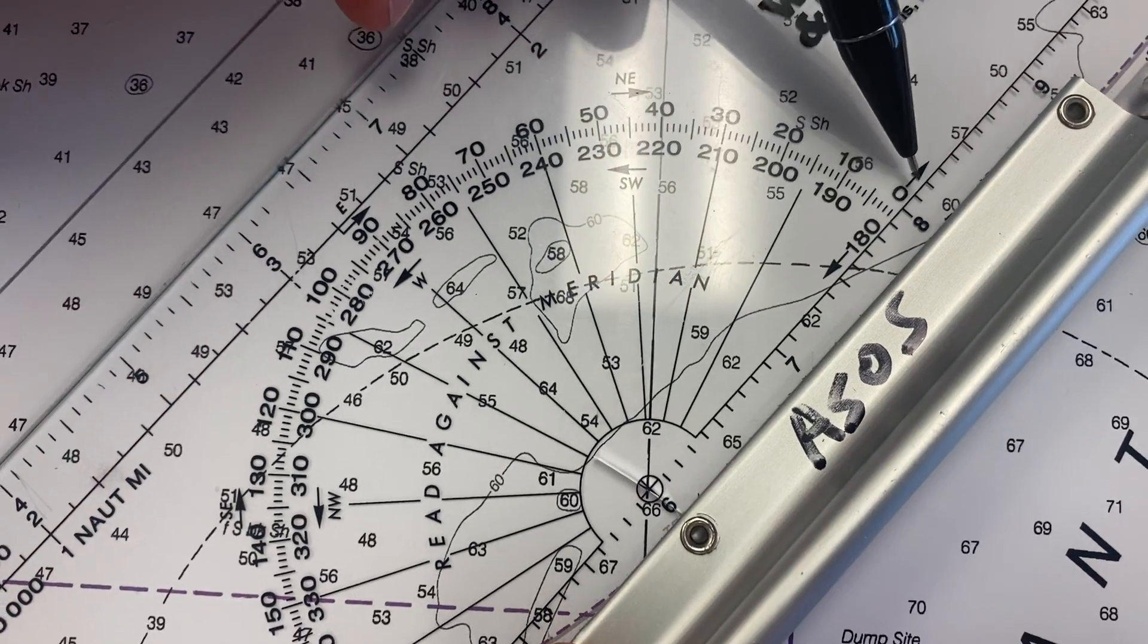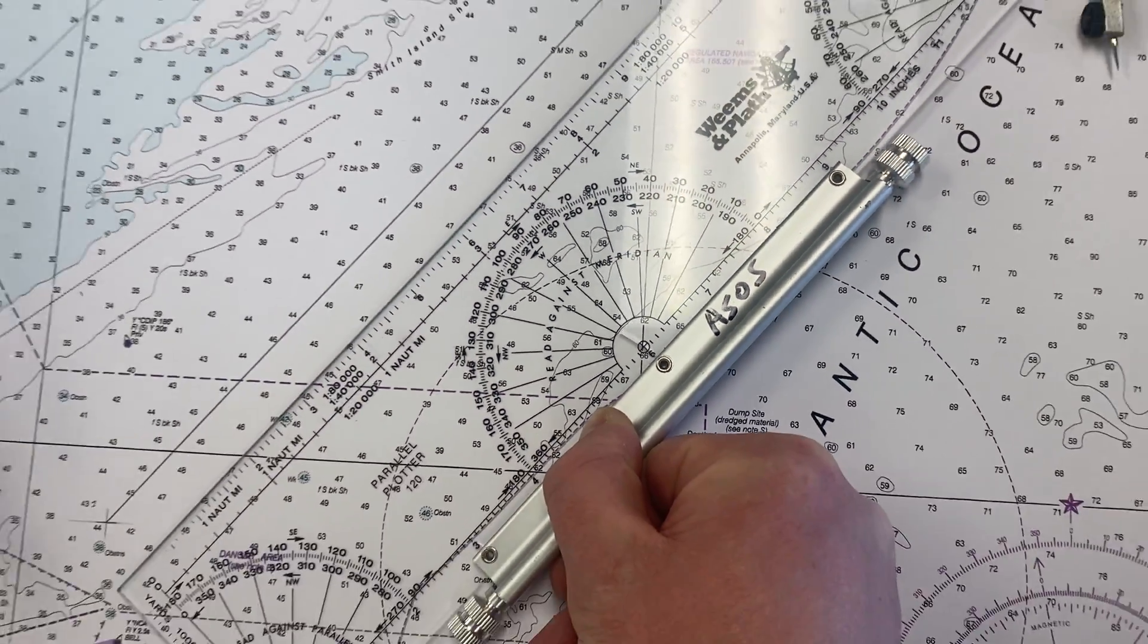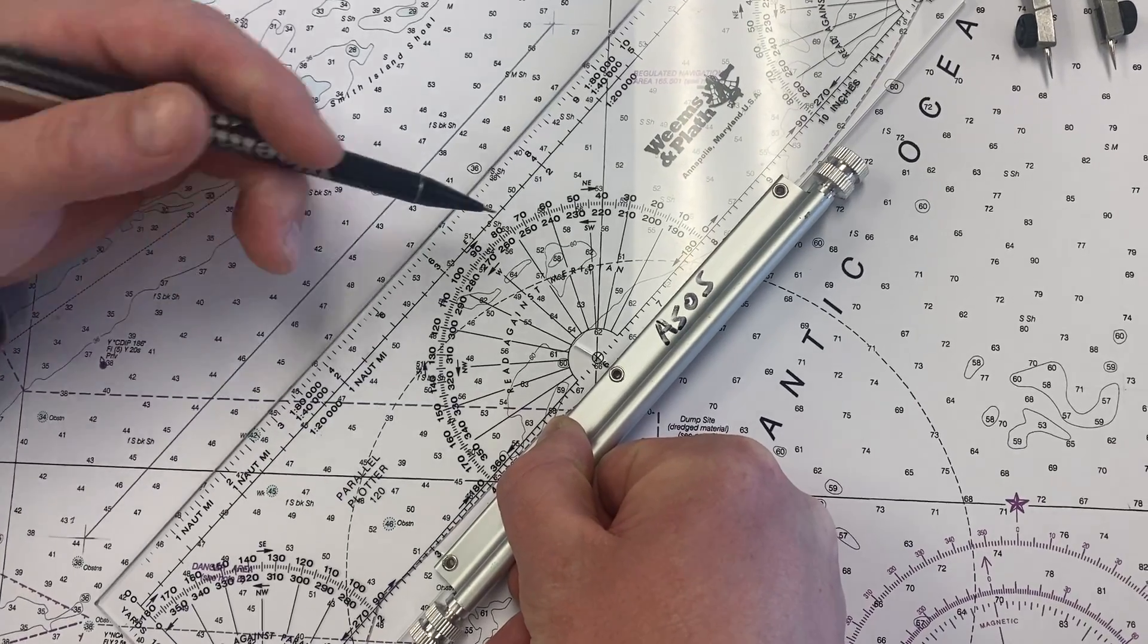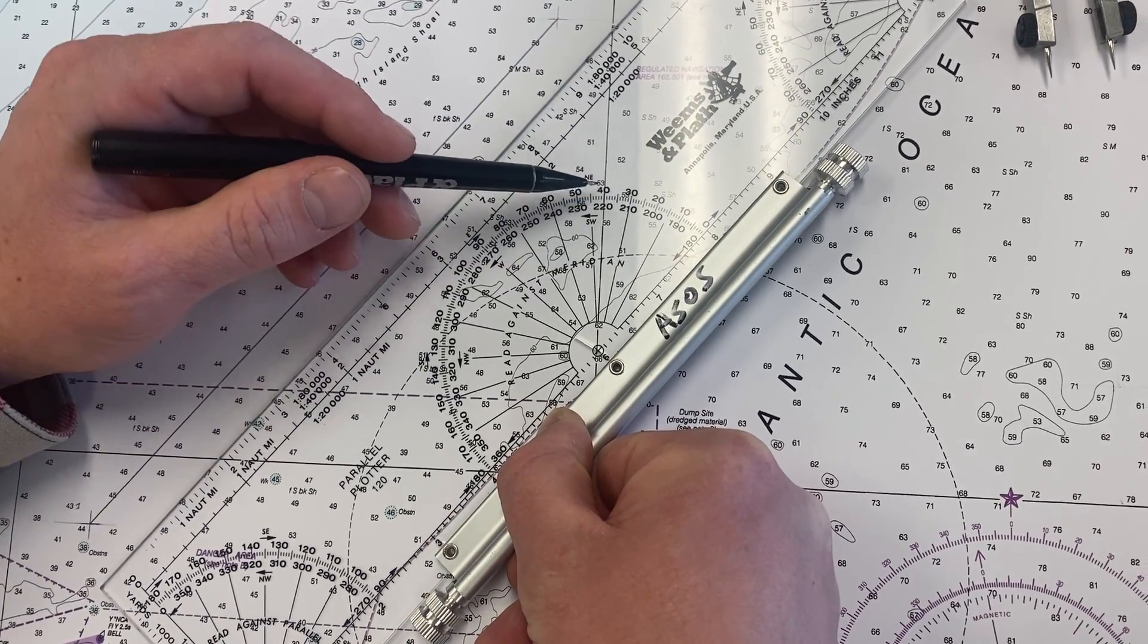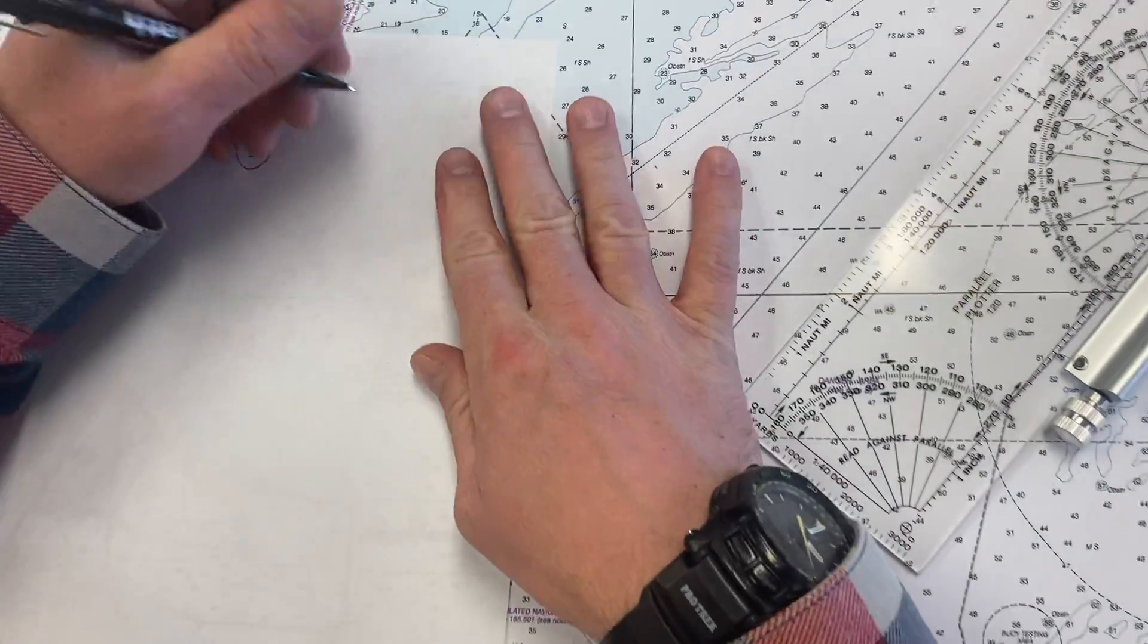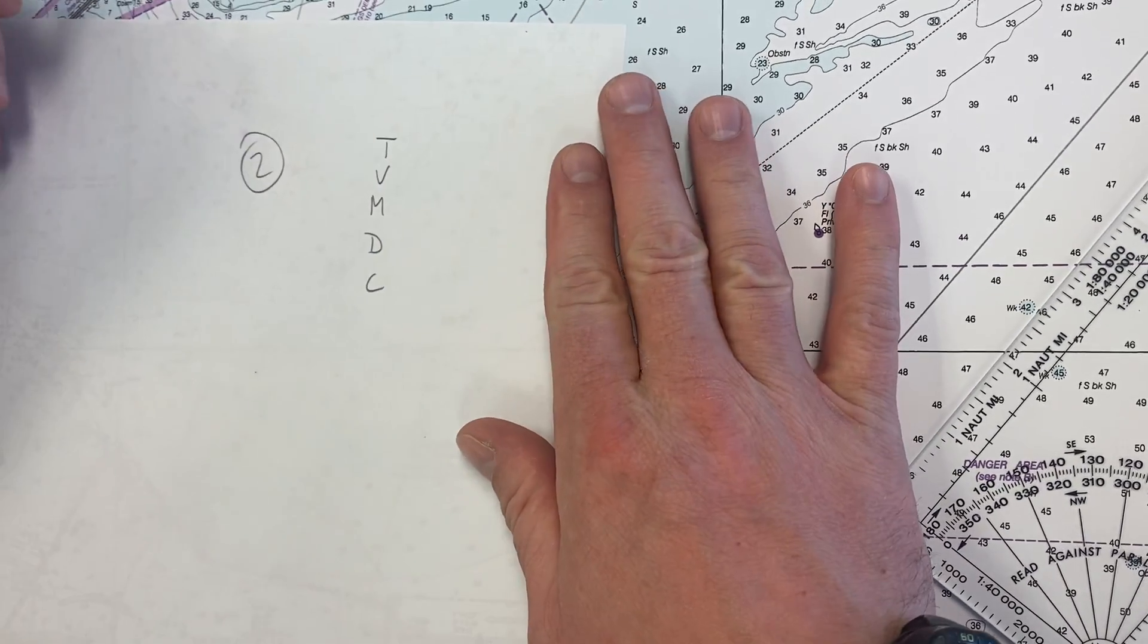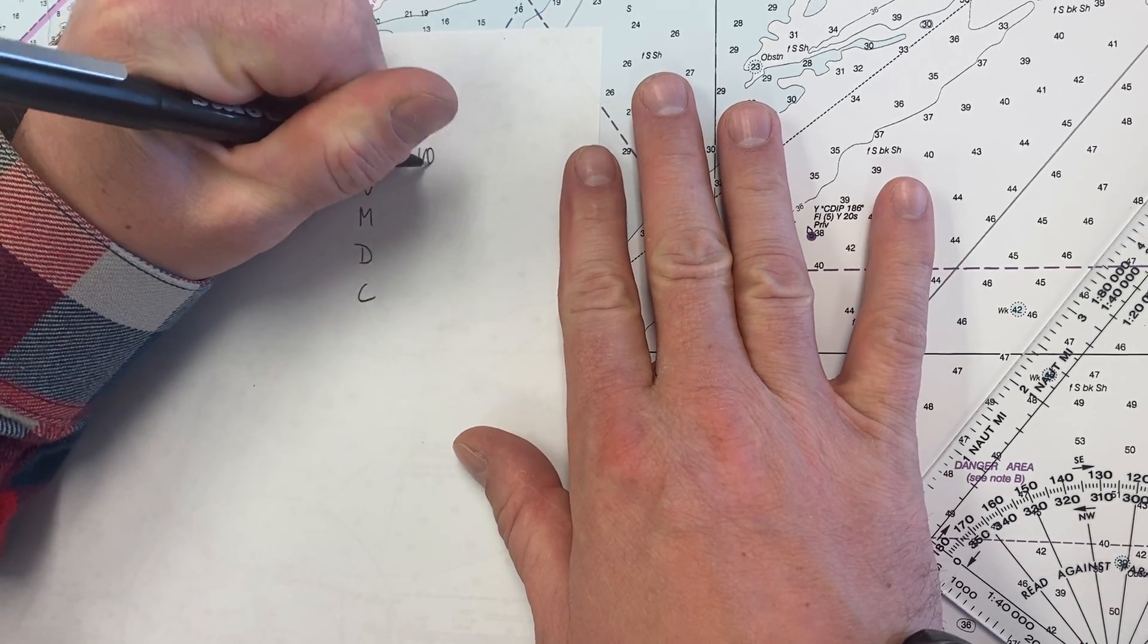Now how do I know to go up the top section of numbers versus the bottom? Well we're going in an easterly direction so that means I'm going to go off the top numbers which are zero to one eight zero on the easterly side. All right so we have a true of zero four zero degrees. So I'm going to go back to my notebook or my scrap sheet of paper and I'm going to write out my TVMDC. And so we're starting off with true a zero four zero degrees true.